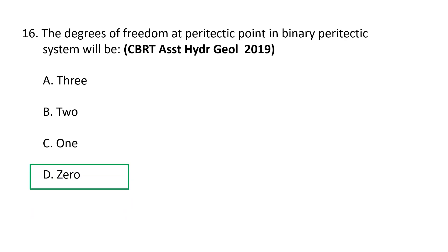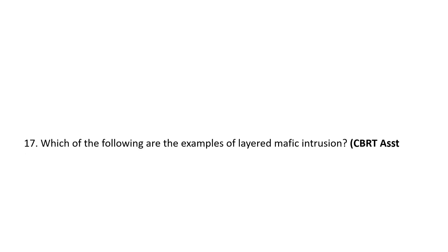Next question: the degrees of freedom at the peritectic point in a binary peritectic system will be: a) 3, b) 2, c) 1, d) 0. The correct option is d) zero. The peritectic point is the point on a phase diagram where a reaction occurs between a previously precipitated phase and the liquid to produce a new solid phase. Since there are three phases in the system — component A, component B, and melt — the system has no degrees of freedom.